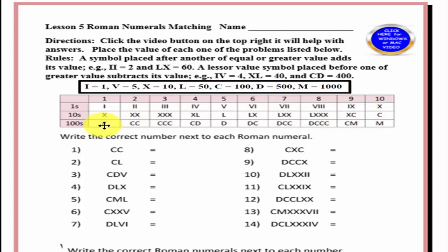C is 100. 1c is 100, 200, 300. A c before a d is going to be 400. A d is 500.